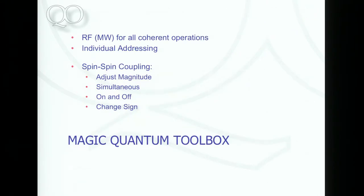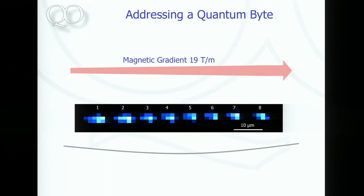Let me tell you about how you work in the lab with these magic traps. We use radio frequency for everything coherent. We still need laser light to read out the ions and to cool them — very undemanding laser light. What I want to show you first is that individual addressing works very well. Even though the microwaves have centimeters of wavelength, you can resolve ions that are just a few micrometers apart by having this gradient.